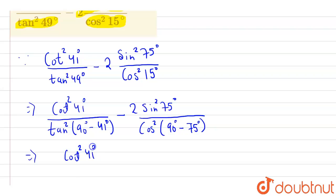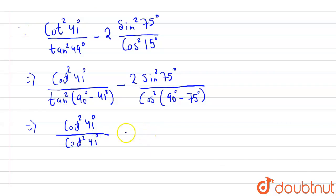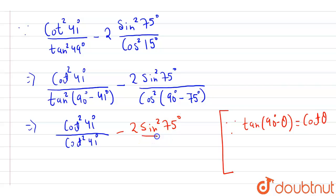So our expression becomes: cot squared 41 degrees upon tan squared (90 degrees minus 41 degrees), which becomes cot squared 41 degrees. This is because we know that tan(90 degrees minus theta) equals cot theta. Therefore, tan squared (90 degrees minus theta) becomes cot squared theta.